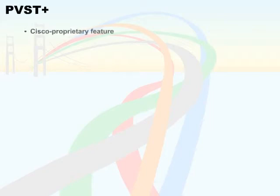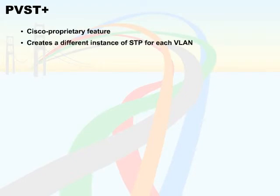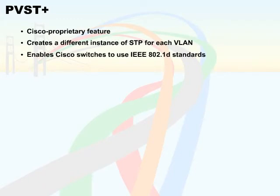PVST Plus is a Cisco proprietary feature that creates a different instance of STP for each VLAN and enables Cisco switches to use IEEE 802.1d standards.